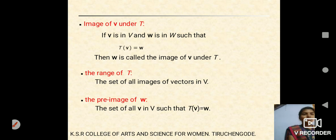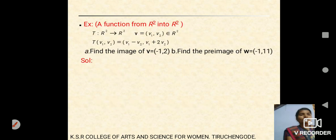The images of V under T: if small v belongs to vector space V and small w belongs to vector space W such that T(v) = w, then w is called the image of v under T. The pre-images of W: the set of all v in V such that T(v) = w is said to be the pre-images of W.